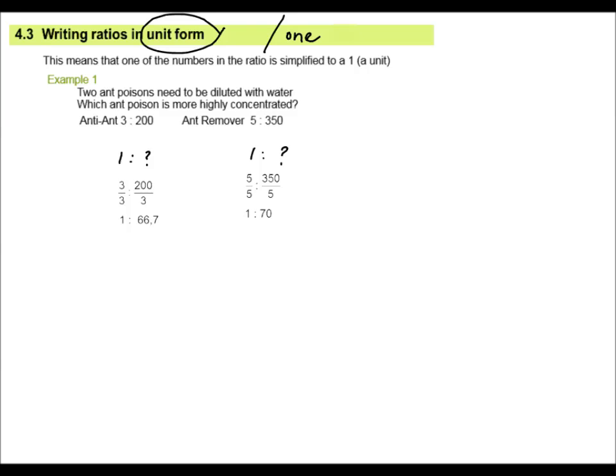Which is the stronger ant poison? Well, I have one unit of ant poison to 66 units of water. So I have less water there. So my strongest ant poison is anti-ant. It is more highly concentrated because for each unit of poison, 66.7 units of water are added.